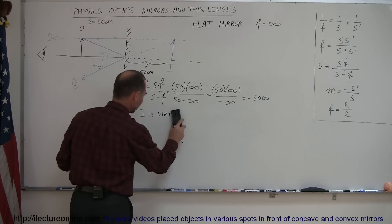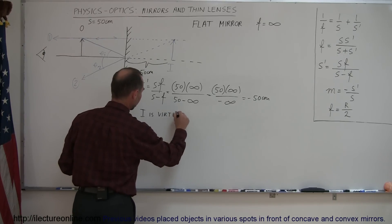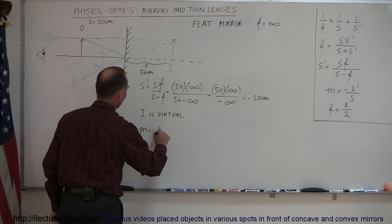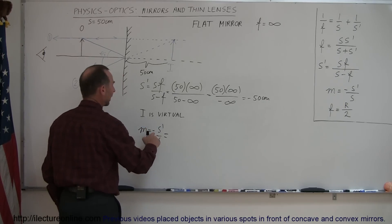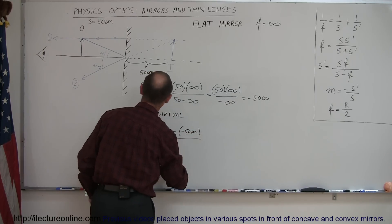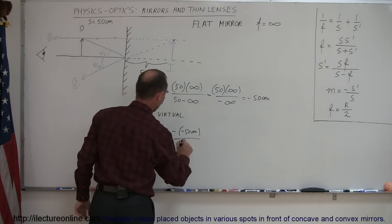Virtual, that doesn't quite look like virtual right there. That's better, and to find the magnification, M, that's equal to minus S' over S. Now, minus times minus 50 centimeters, divided by the object distance, which was given as 50 centimeters.